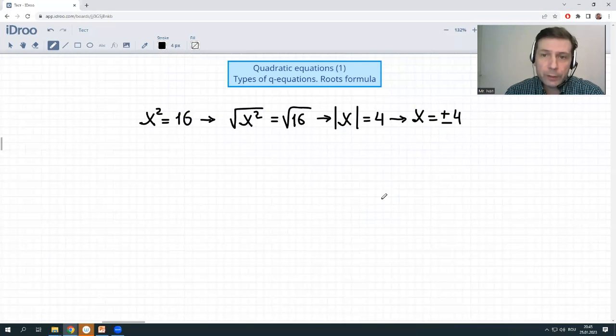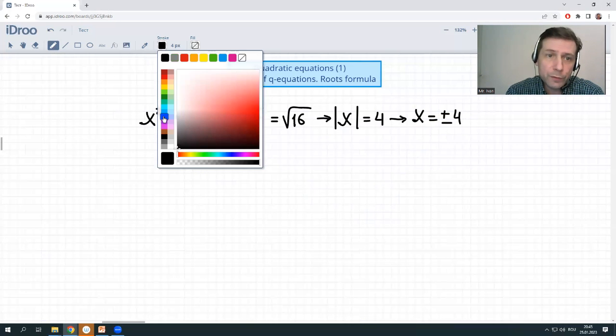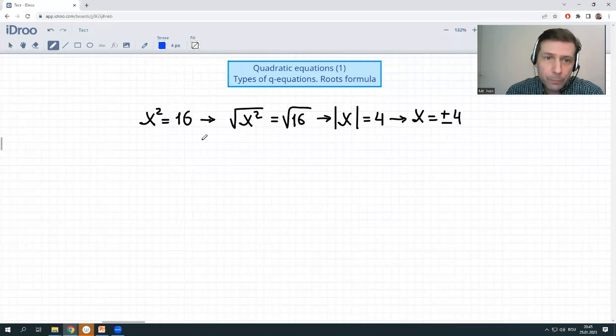Then, if we take a different perspective and we'll say, let us move 16 to the left-hand side, what we'll get? x squared minus 16 is equal to 0.